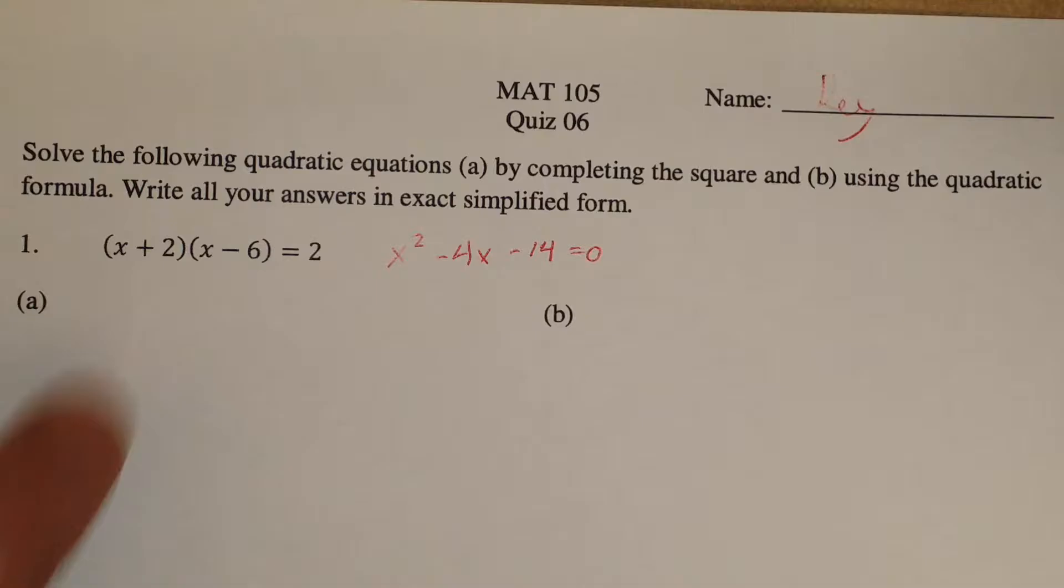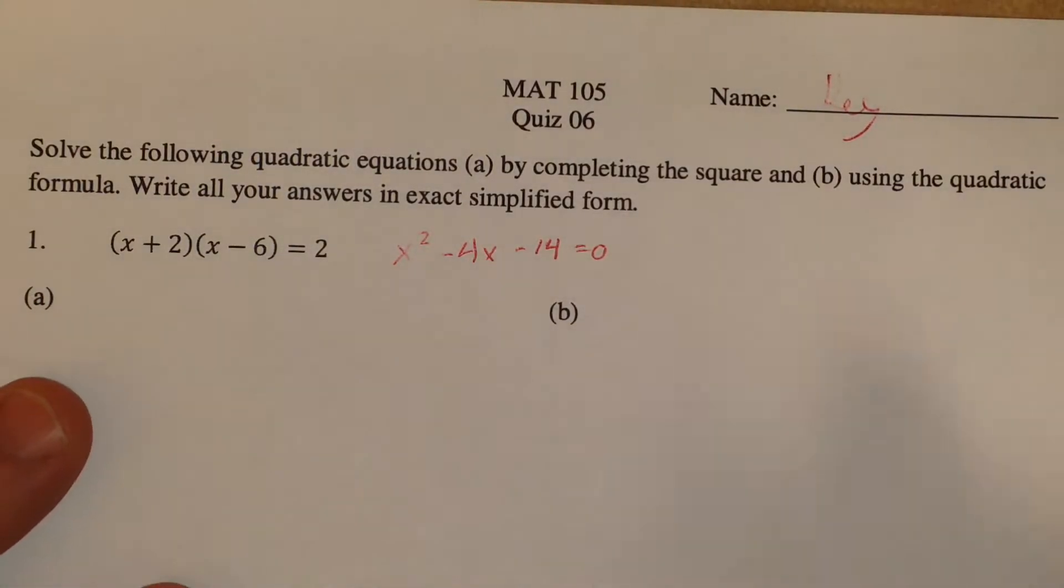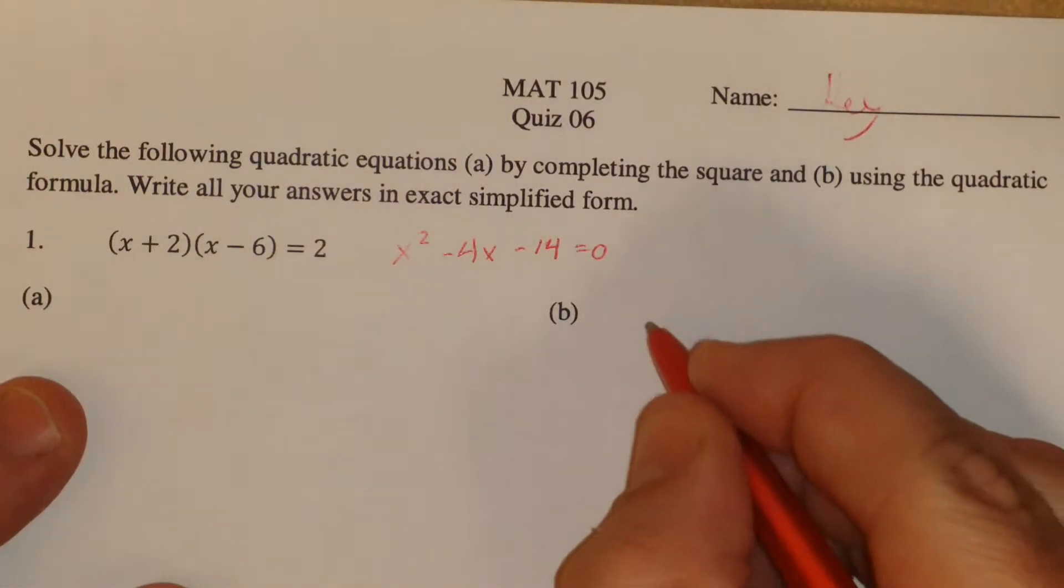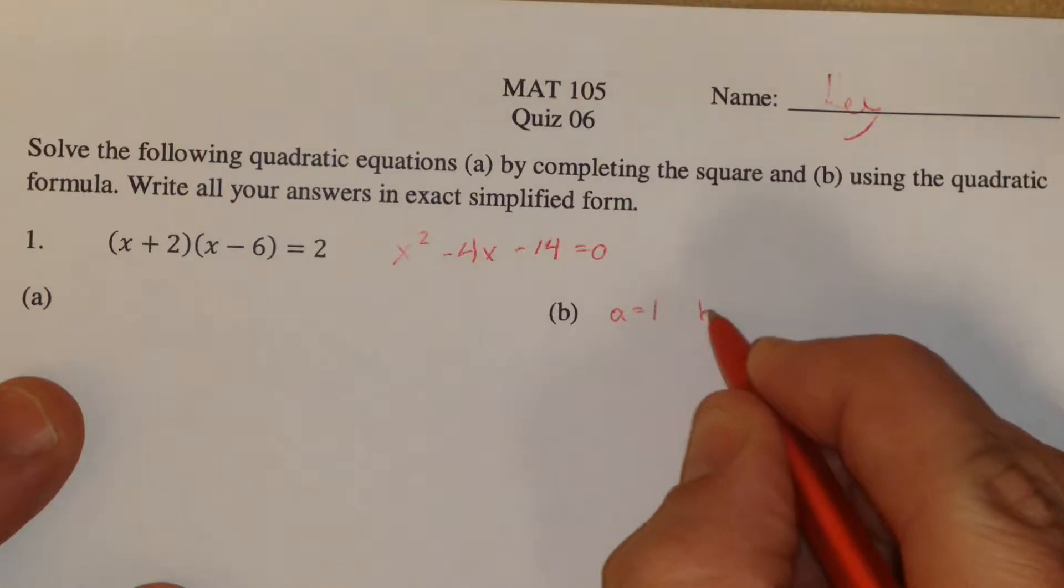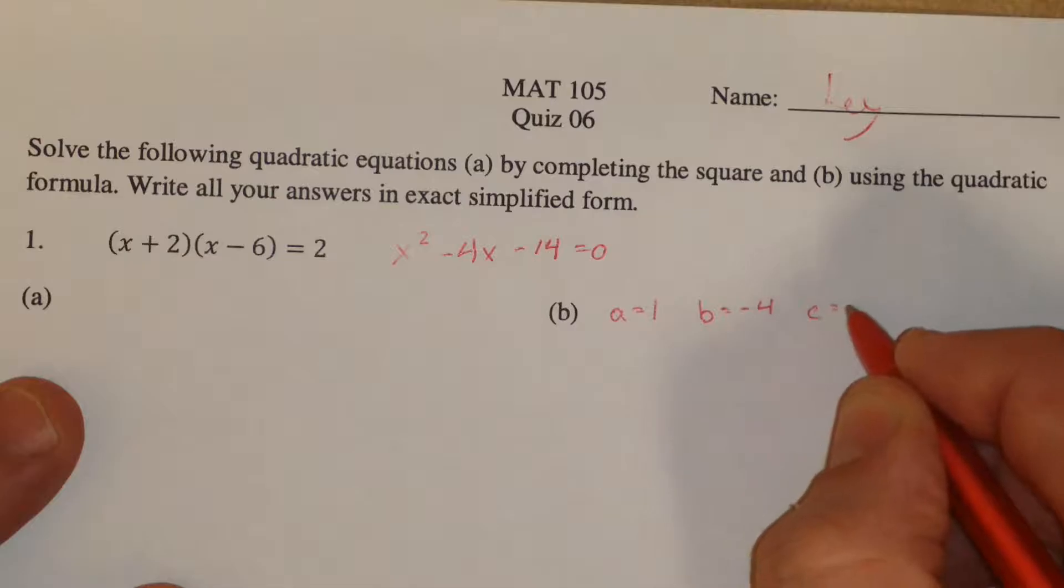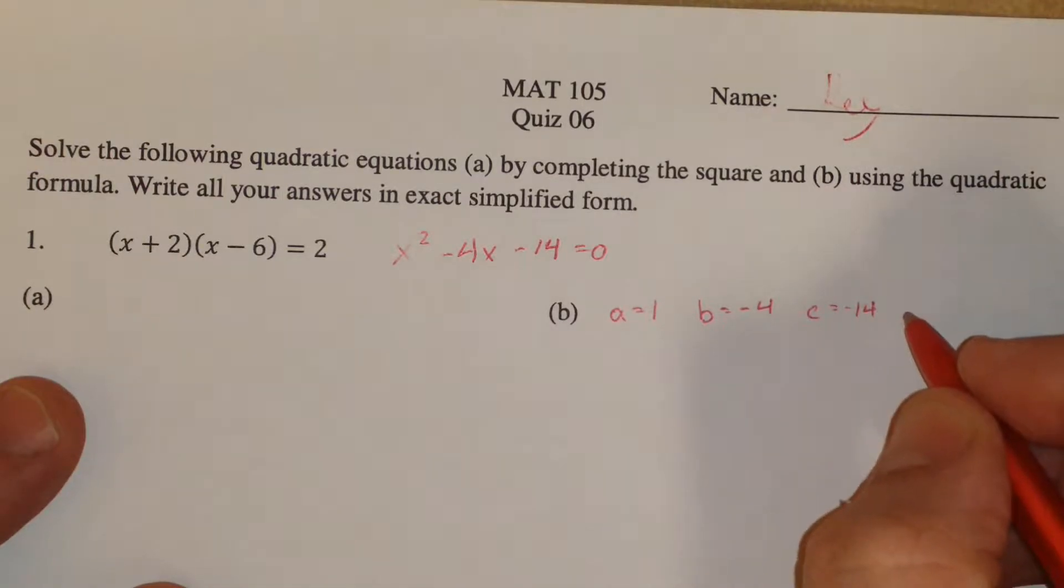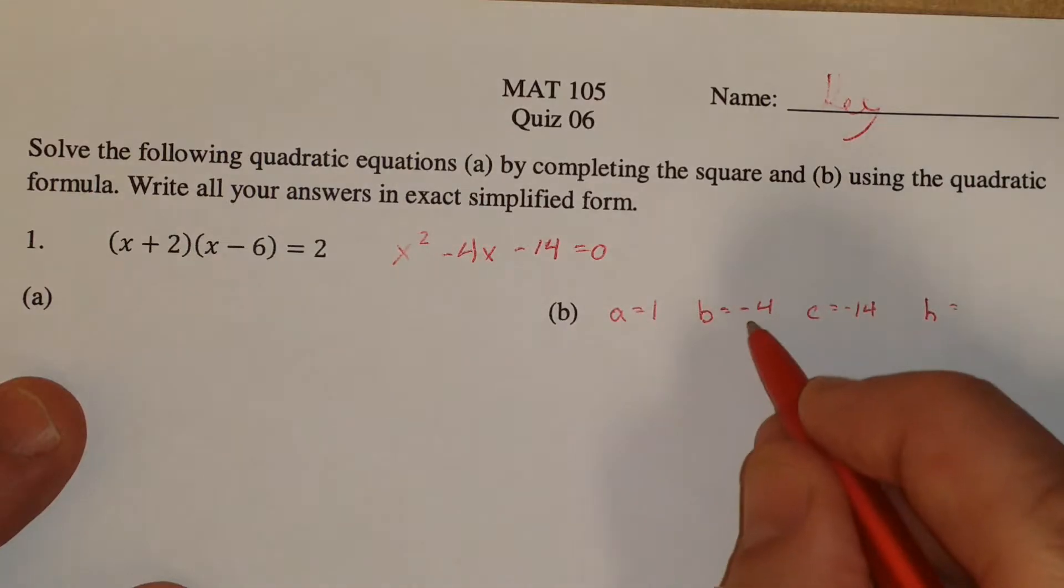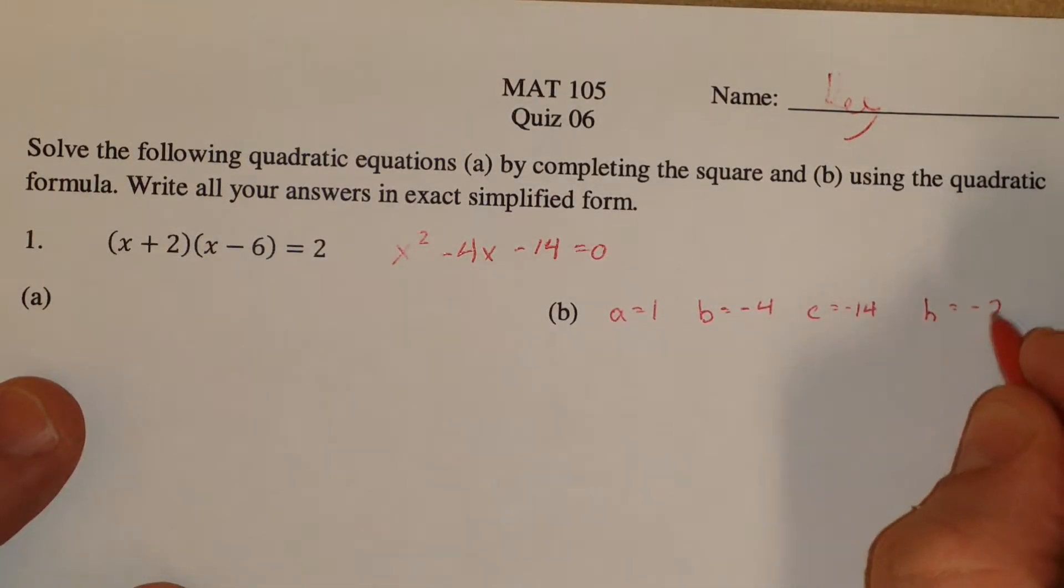So that's what it would be in standard form. So we've got a clearly defined a, b, and c. It's also helpful to get h, which is negative b over 2a, so that would be negative 2.